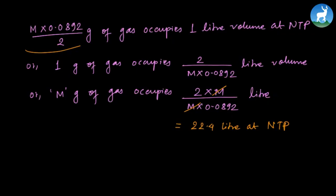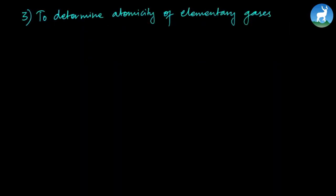The third application of Avogadro's hypothesis is to determine the atomicity of elementary gases. Elementary gases are generally diatomic. Examples include hydrogen, nitrogen, and chlorine gas.